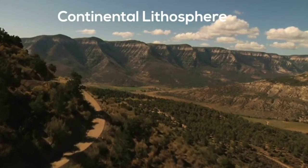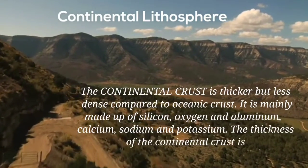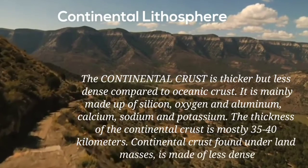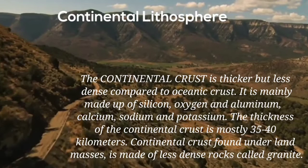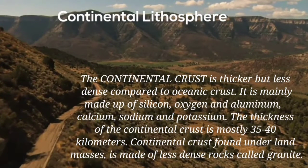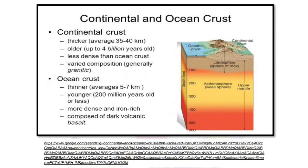Continental crust, however, is thicker but less dense compared to oceanic crust. The thickness of the continental crust is mostly 35 to 40 kilometers and is found under land masses made of less dense rocks called granite. This illustration shows the difference between continental and oceanic crust in terms of thickness, age, density, and varied composition.